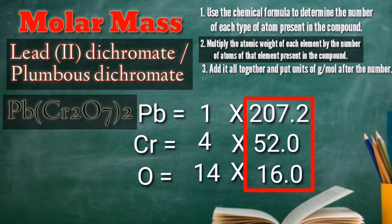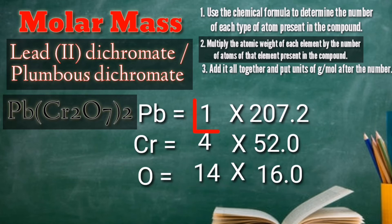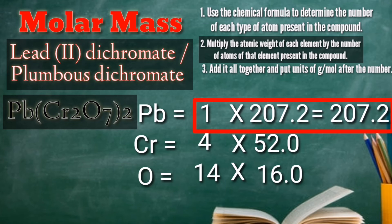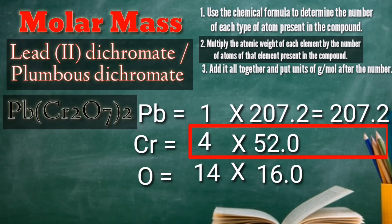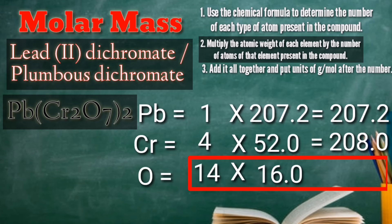Now, let's multiply the atomic weight by the number of atoms. For lead: 1 times 207.2 is equal to 207.2. For chromium: 4 times 52 is equal to 208. For oxygen: 14 atoms multiplied by 16 gives us 224.0 grams.